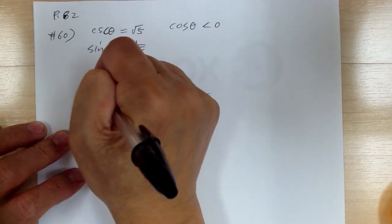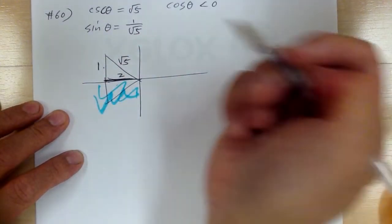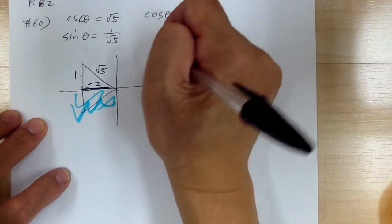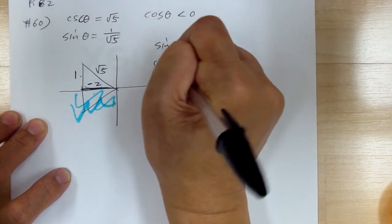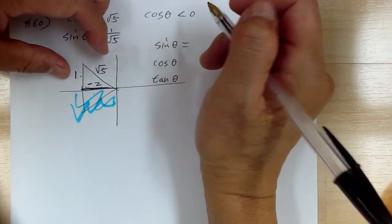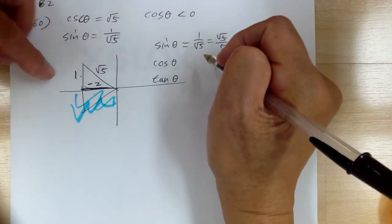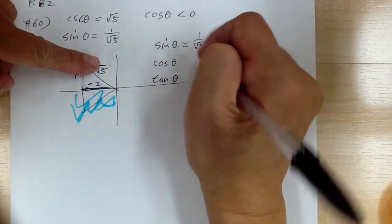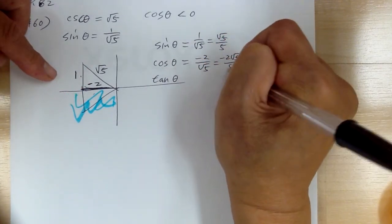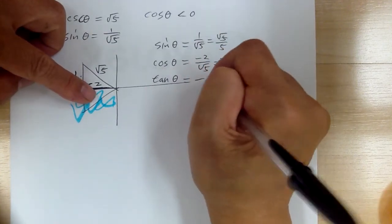Sine is 1 over √5, so the sides are 1 and √5. Using the Pythagorean theorem, the remaining side is 2, and it's negative. Sine theta is vertical over hypotenuse, so 1 over √5, which equals √5 over 5. Cosine theta is horizontal over hypotenuse, giving negative 2 over √5, which equals negative 2√5 over 5. Tangent is vertical over horizontal, giving negative 1 over 2.